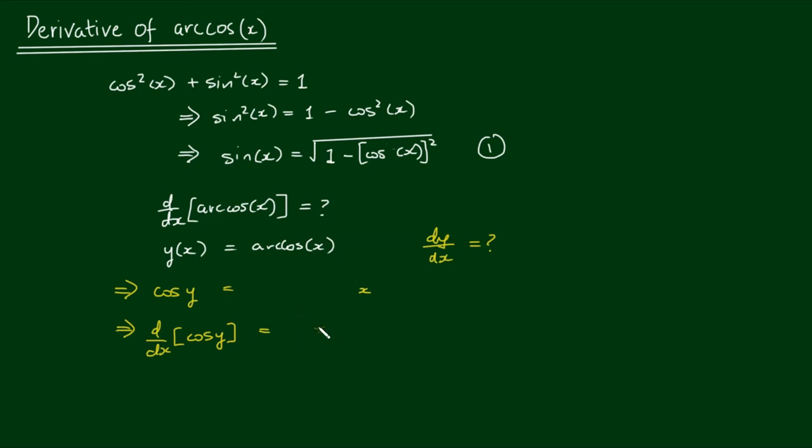And if I apply the chain rule to the left-hand side, I get cosine differentiates to negative sine of the function y times dy/dx, which is equal to 1.